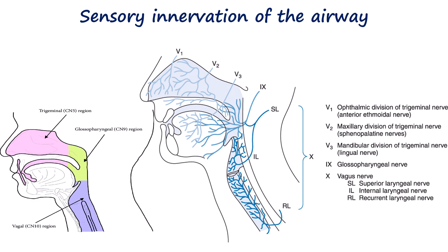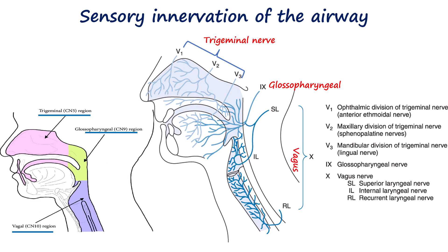In nutshell, we have three important nerves: trigeminal, glossopharyngeal, and vagus nerves. The nose and nasopharynx is supplied by the trigeminal nerve, the oropharynx by the glossopharyngeal nerve, and the larynx and trachea by the vagus nerve through its superior laryngeal and recurrent laryngeal branches. There is some overlap in these areas of supply, so the boundaries are not clear cut, but this gives a good overall picture of airway sensation.